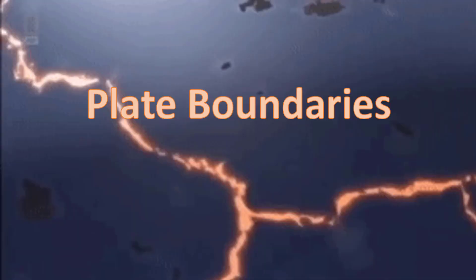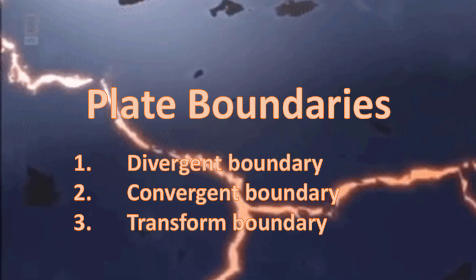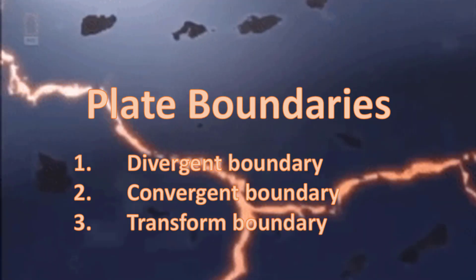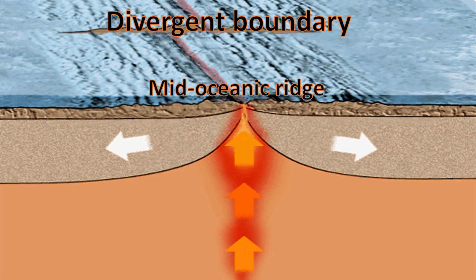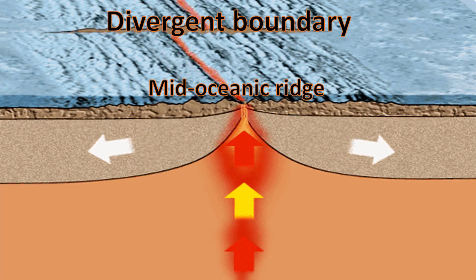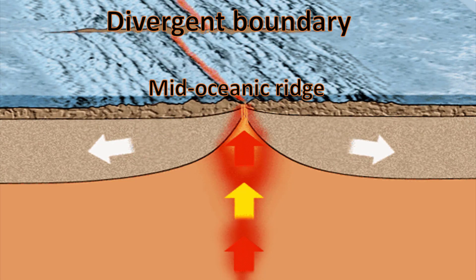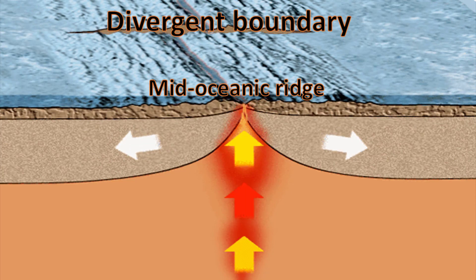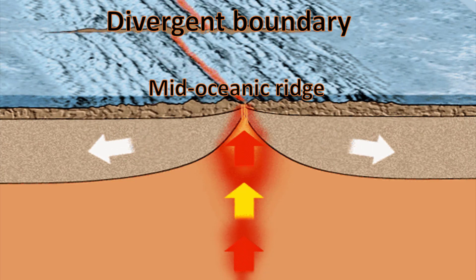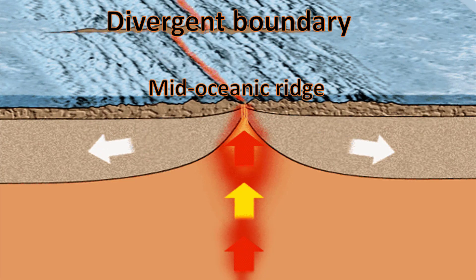There are three different types of plate boundaries: divergent boundary, convergent boundary, and transform boundary. A divergent boundary occurs when two tectonic plates move away from each other. Along these boundaries, earthquakes are common and magma rises from the earth's mantle to the surface, solidifying to create new oceanic crust at mid-oceanic ridges. Earth's crust is created at such plate boundaries.